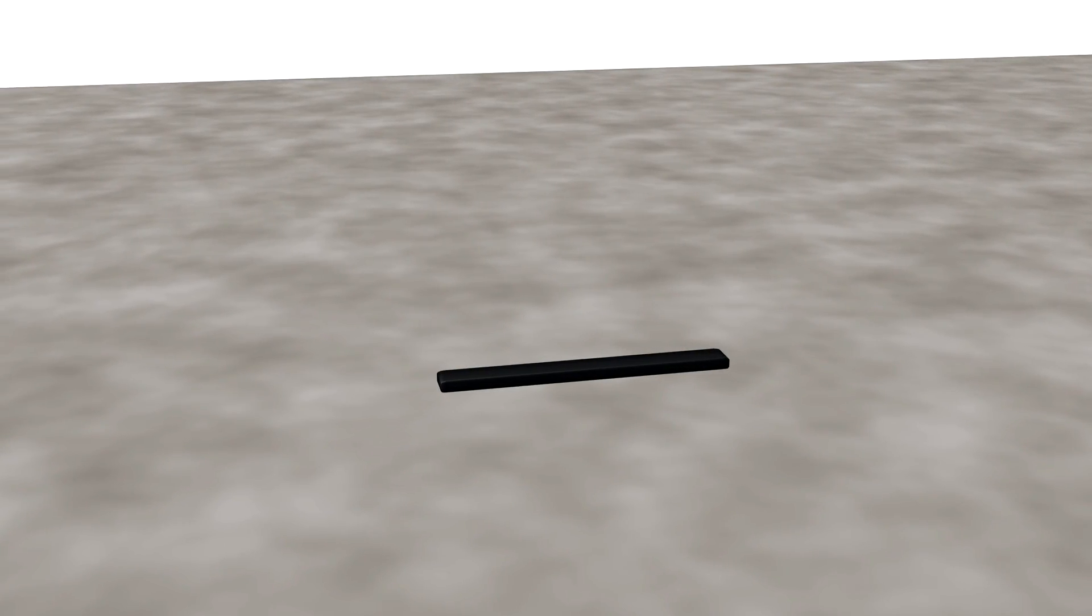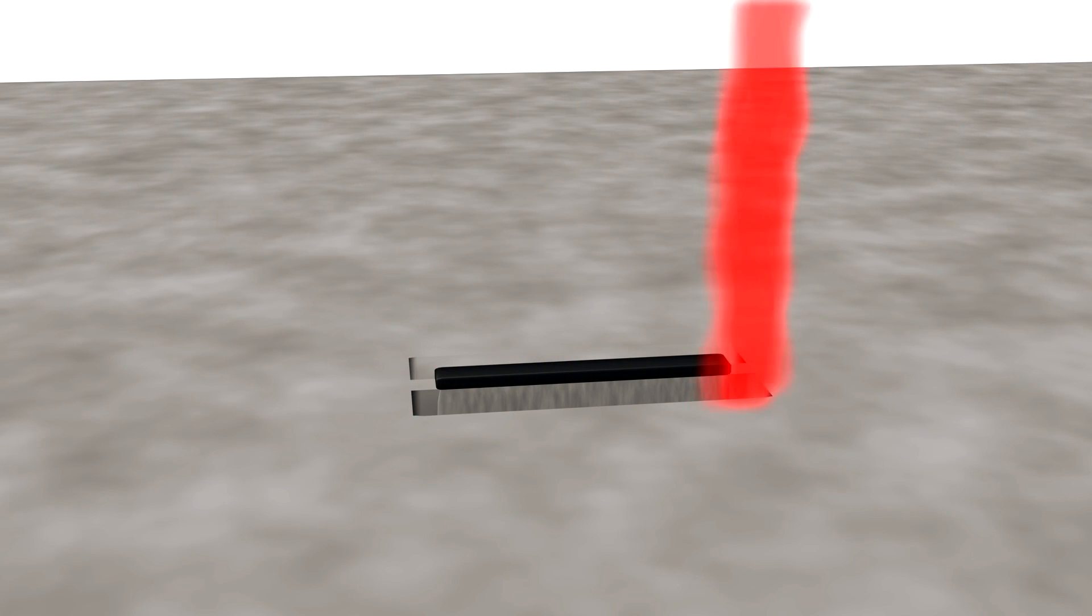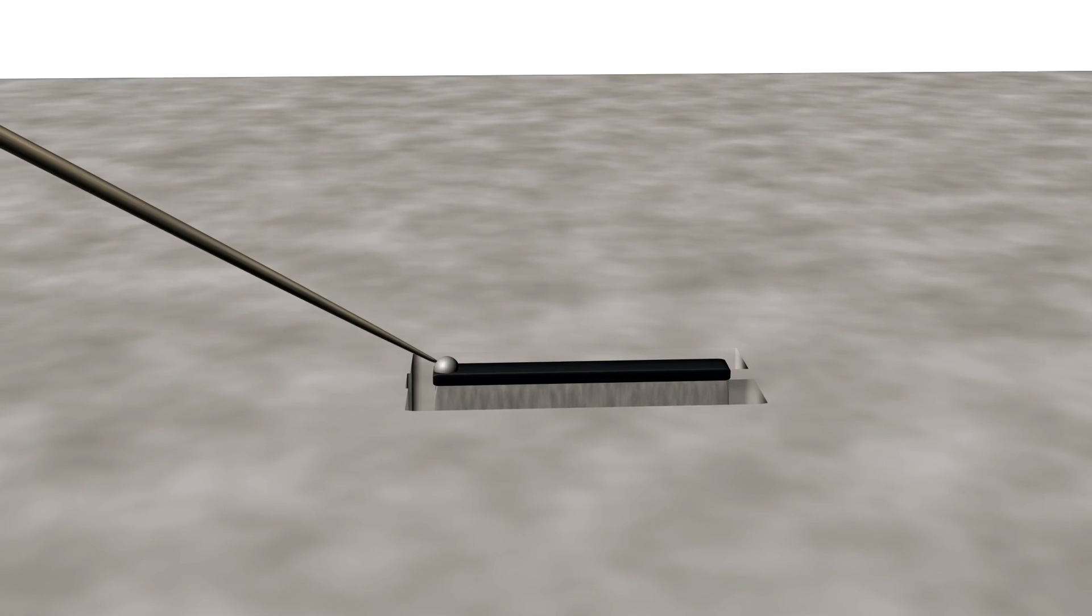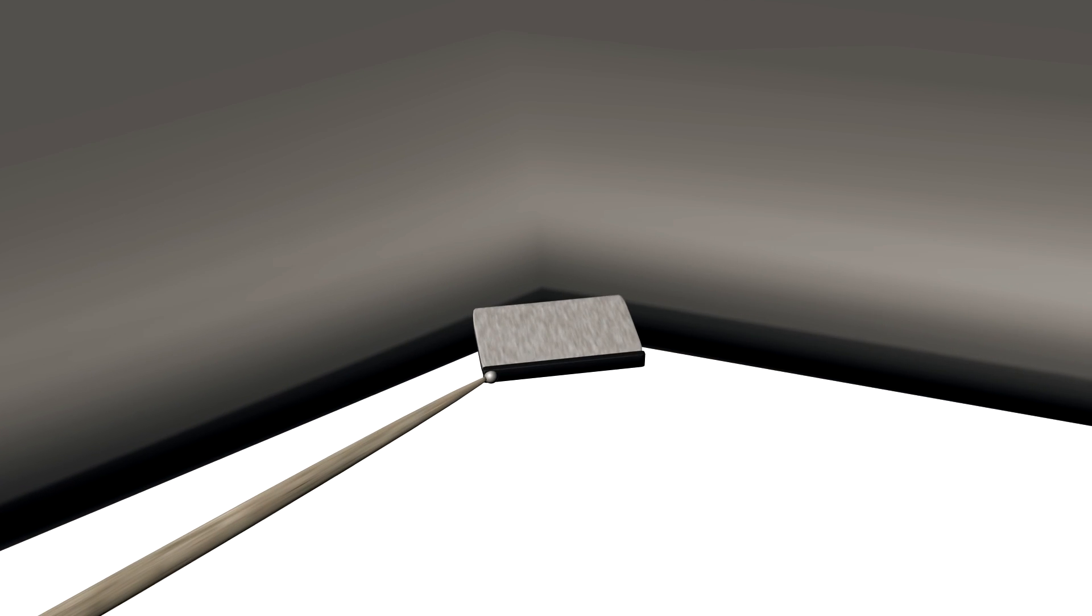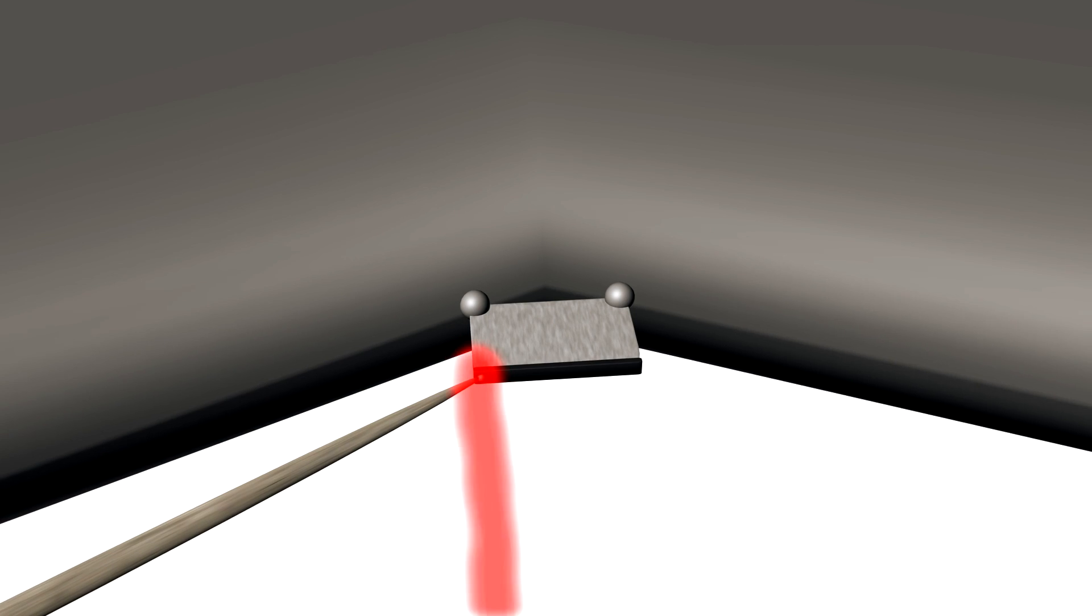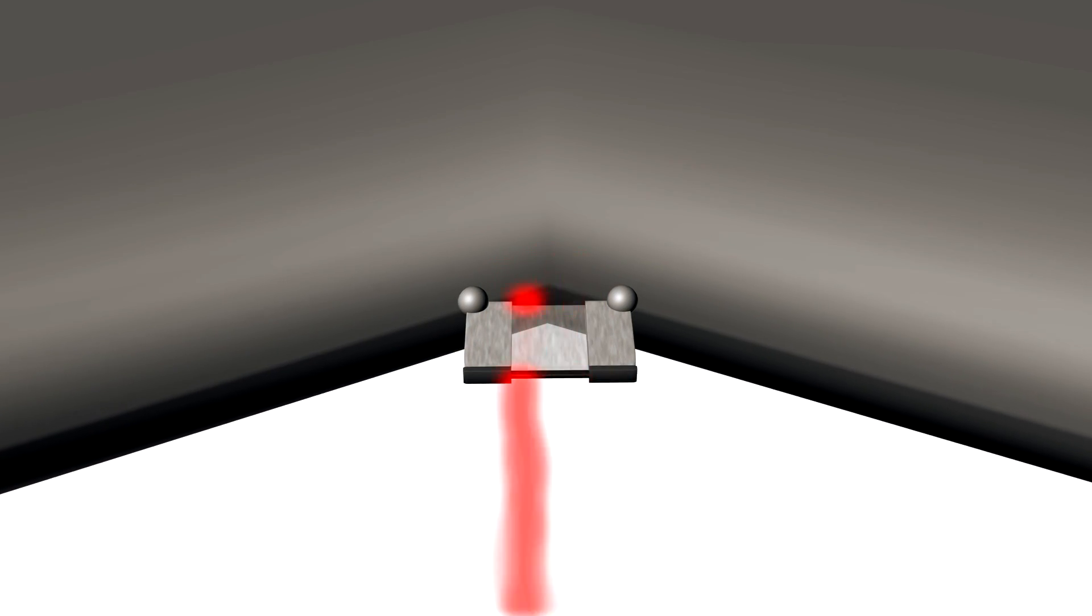For that purpose, a thin lamella is cut out of the sample with the focused ion beam and extracted carefully with a nano-manipulator. Once the lamella is attached to a special holder and thinned even further, it can be studied under the transmission electron microscope.